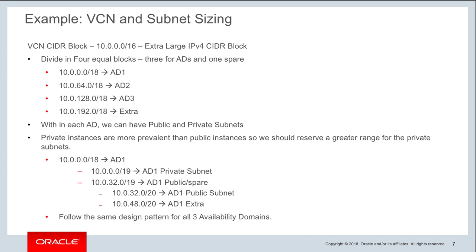You can apply the same design for all three availability domains. This approach gives you an equal division of subnets across the three ADs, enabling a highly available application infrastructure. It also gives you reserved or extra IPs so that for future growth you already have additional IP space available within each availability domain.